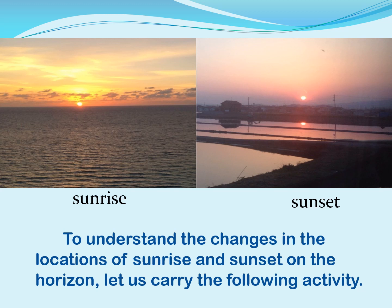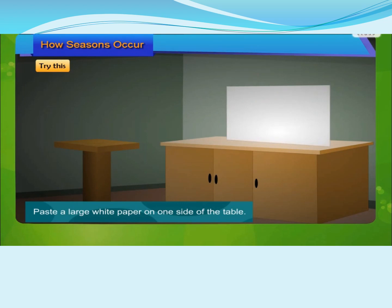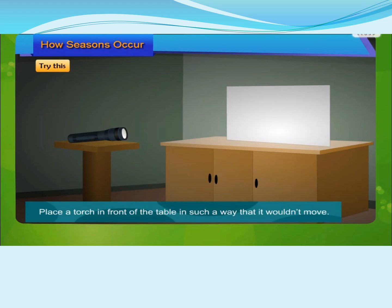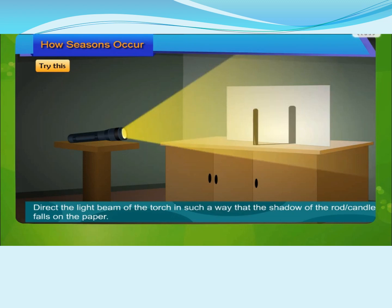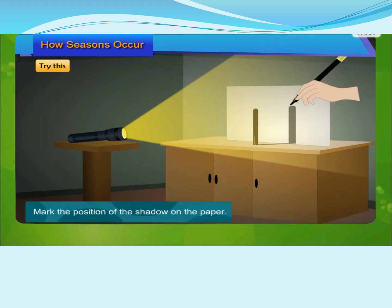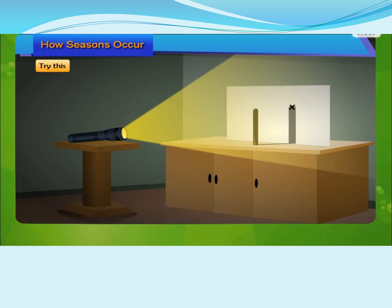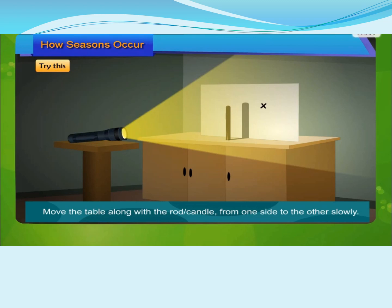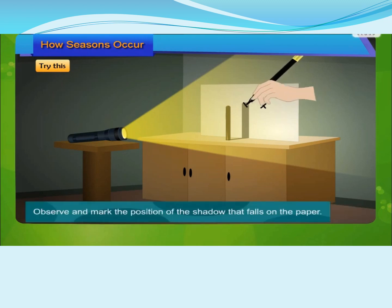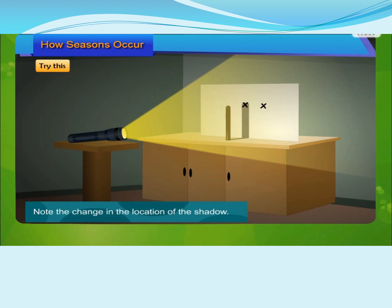This activity is taken from the Study Cloud app, which is available on YouTube channel. Try this: paste a large white paper on one side of the table. Place a torch in front of the table in such a way that it wouldn't move. Stand a rod or a candle between the white paper and the torch. Direct the light beam of the torch so that the shadow of the rod or candle falls on the paper. Mark the position of the shadow on the paper. Move the table along with the rod or candle from one side to the other slowly.